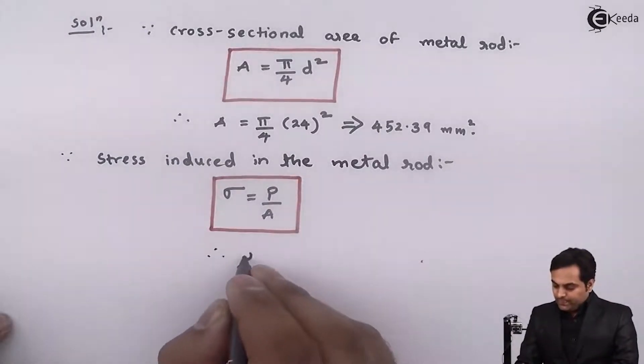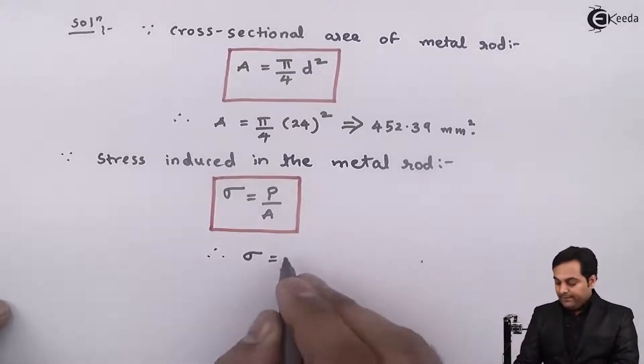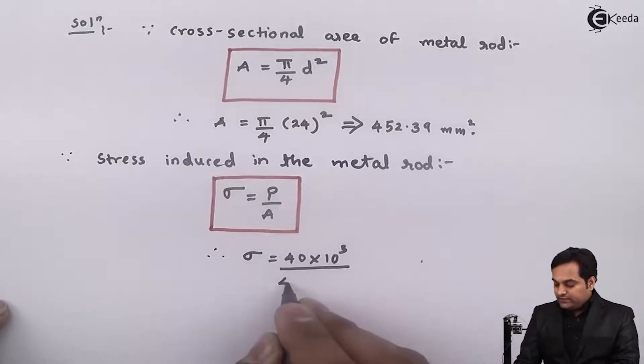So therefore σ it is equal to load is given in the problem as pull type having 40×10³ Newton, area is 452.39.